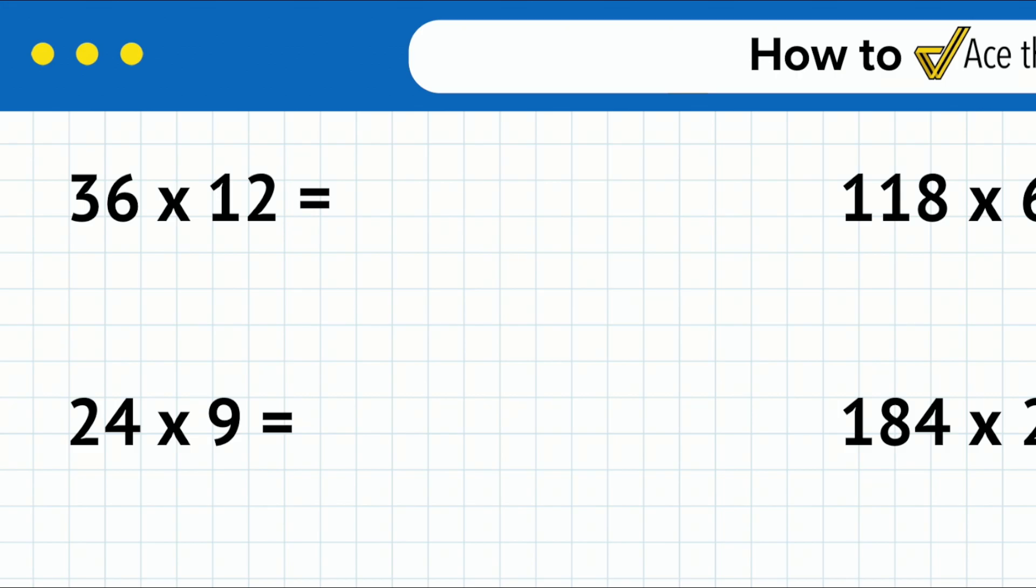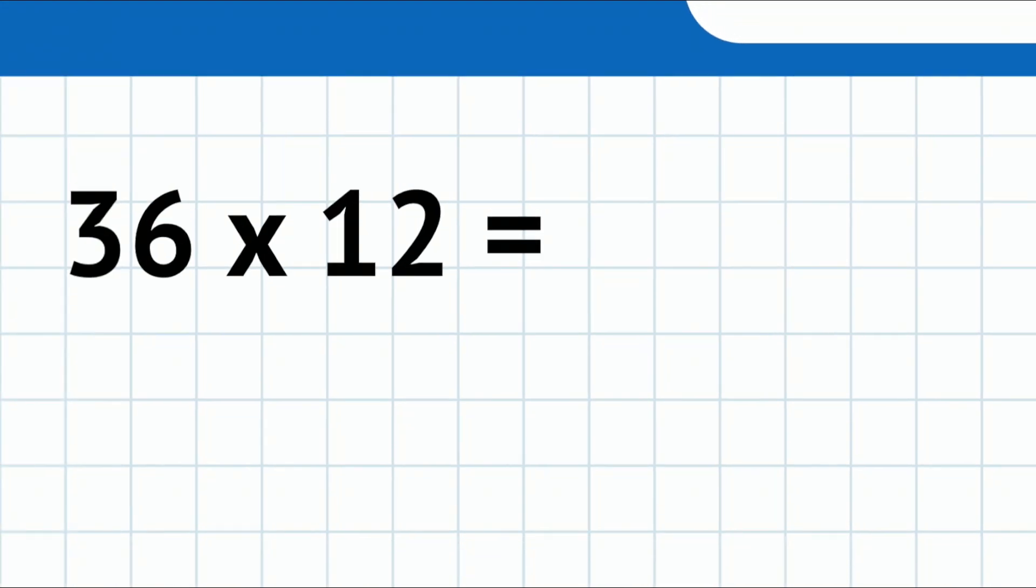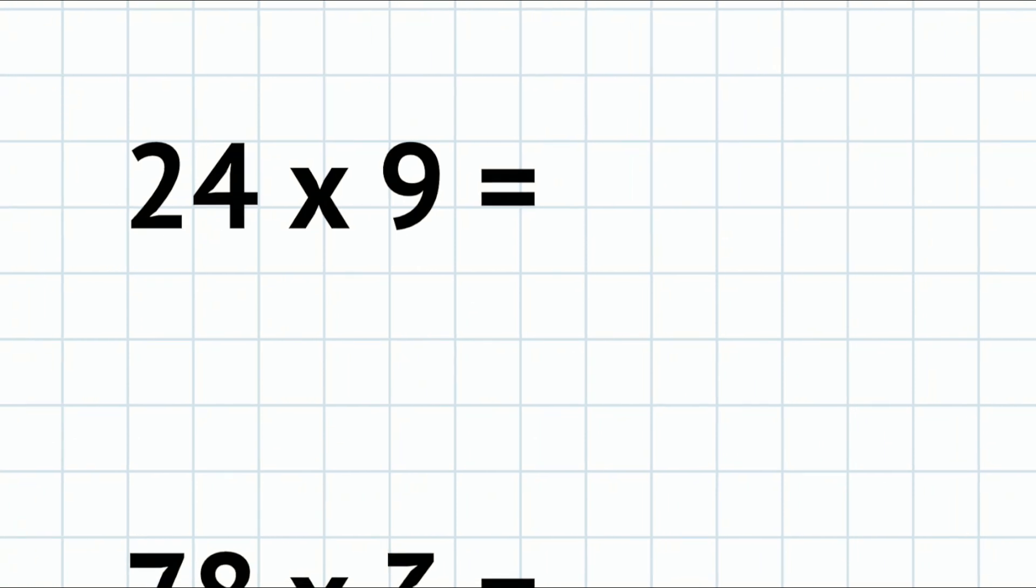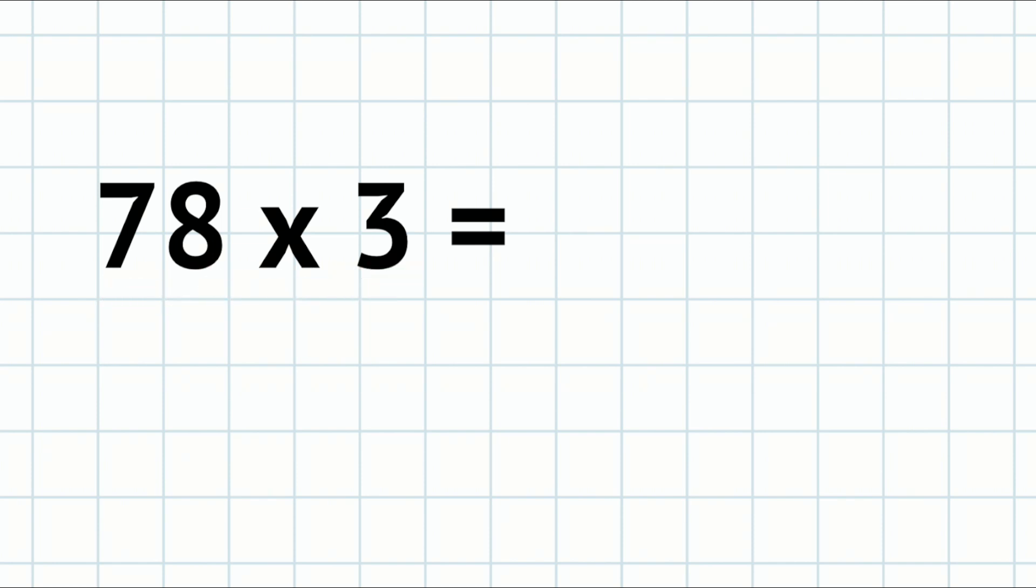36 times 12—I would treat this as 36 times 10 is 360, 36 times 2 is 72, 360 plus 72 is 432. I'm going to split the 12 into 10 and 2 because anything times 10 is pretty easy. 24 times 9—that's 180 plus 36, which is 216. 78 times 3—that's 210 plus 24, which is 234.